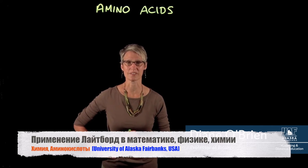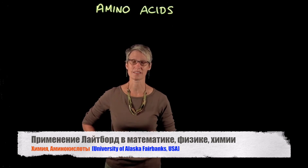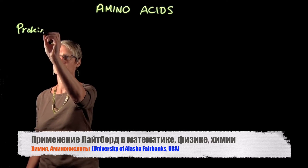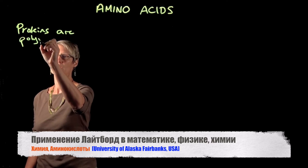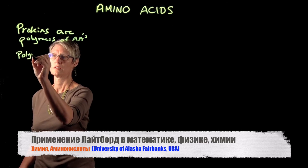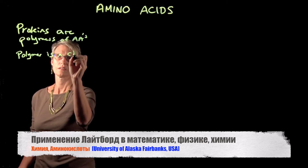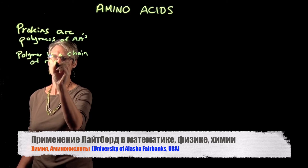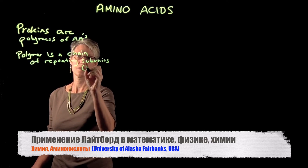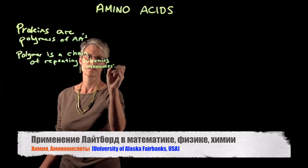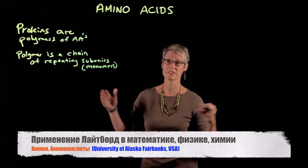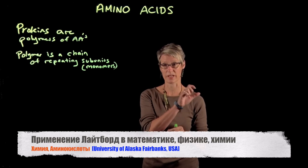Our next class topic is going to be on proteins and protein structure. The topic of this video is amino acids, and amino acids are the building blocks of proteins. To give it a fancy terminology, proteins are polymers of amino acids. A polymer is a chain of repeating subunits, and we call those subunits monomers. Quite a few of the biological macromolecules we'll talk about in this class are actually polymers — long chains of a repeating monomer linked together by a particular kind of bond.